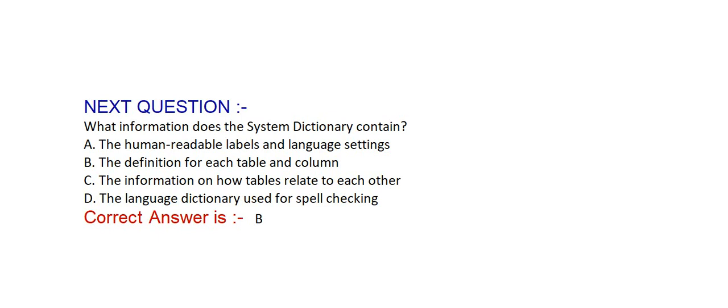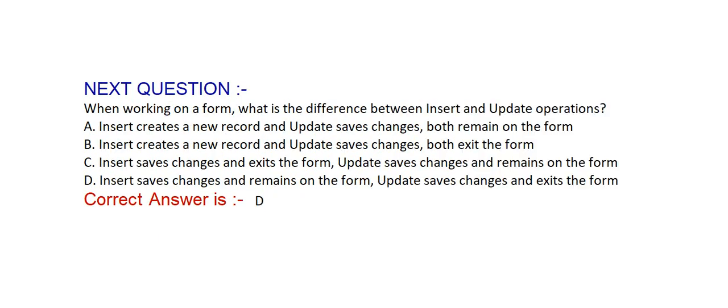What information does the system dictionary contain? Option A: the human-readable label and language settings. Option B: the definition of each table and column. Option C: the information on how tables relate to each other. Option D: the language dictionary used for spell checking. Correct answer is option B — the definition of each table and column.